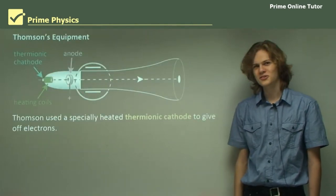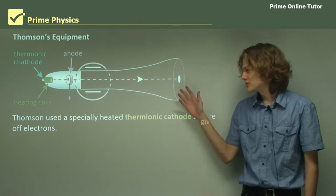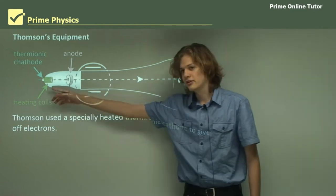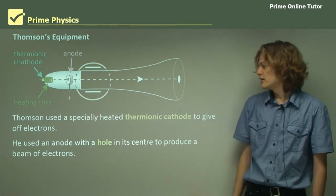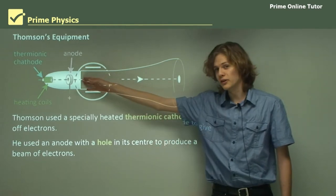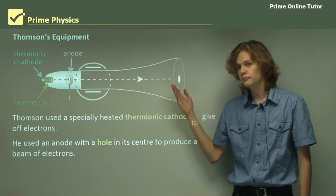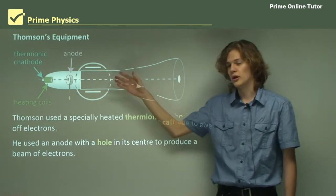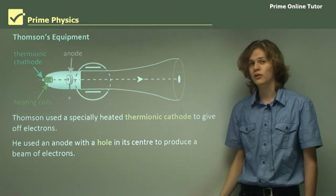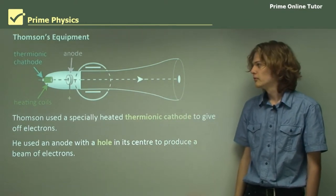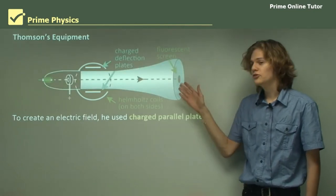That means that if a charged particle is going through an electric field and a magnetic field undeflected, we can find its velocity simply by dividing the strength of the electric field by the strength of the magnetic field. So, this is what Thompson decided to do. His experimental setup looks something like this. He used a specially heated thermionic cathode to give off lots of electrons, and he had an anode over here with a hole in its center. The electrodes given off the cathode would move toward the anode, and some of them would strike the anode, but others would go through the hole in the middle, producing a thin beam of electrons.